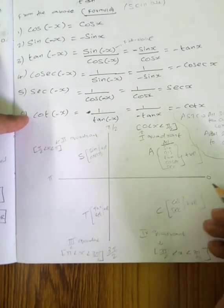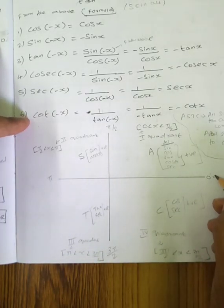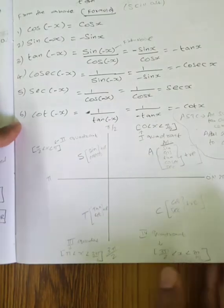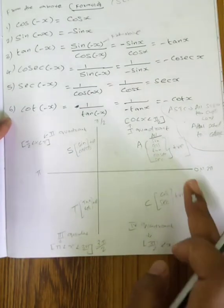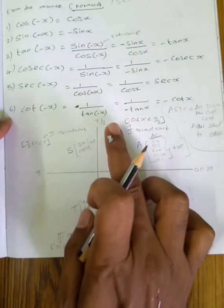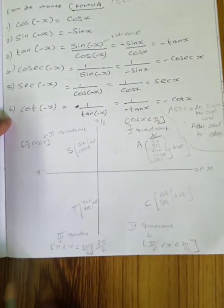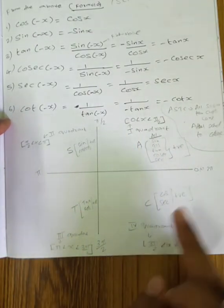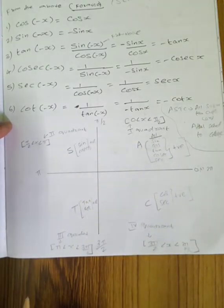If you want to write it complete — if you want to write two full points, that is 360 degrees, one revolution. So: 0, 90, 180, 270, 360.